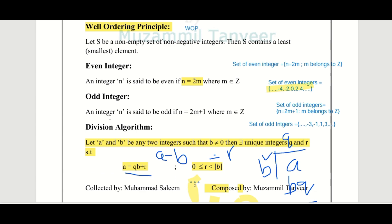An integer n is said to be odd if n equals 2m plus 1, where m belongs to the set of integers. The set of odd integers on both sides looks like: ..., minus 3, minus 1, 1, 3, ... and so on in both directions.